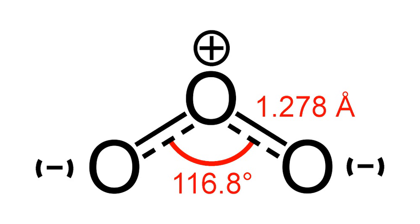Ozone, or trioxygen, is an inorganic molecule with the chemical formula O3. It is a pale blue gas with a distinctively pungent smell. It is an allotrope of oxygen that is much less stable than the diatomic allotrope O2, breaking down in the lower atmosphere to O2 or dioxygen.